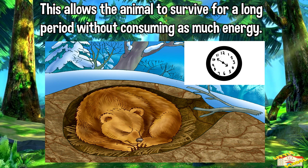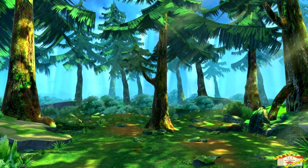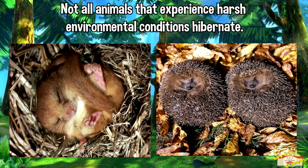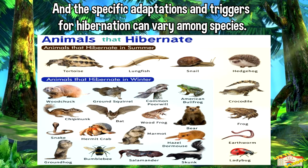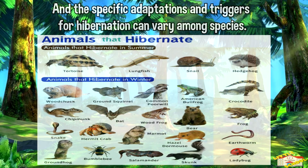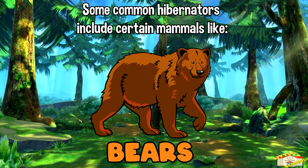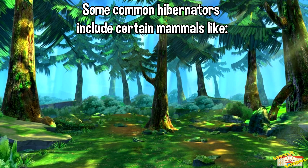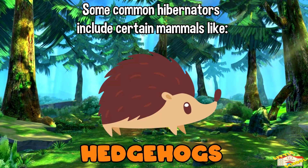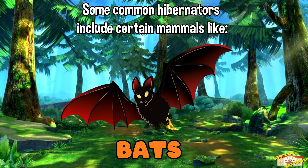Not all animals that experience harsh environmental conditions hibernate, and the specific adaptations and triggers for hibernation can vary among species. Some common hibernators include certain mammals like bears, hedgehogs, bats, and some rodent species like the dormouse.